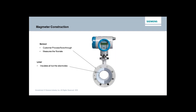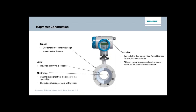Staying with the electrodes for just a moment — you may find in some mag meter designs some electrodes mounted along the bottom of the pipe in a horizontal installation. That would be a grounding electrode, and the purpose is to provide a way to grab any stray voltages that may be part of the process, coming down the process line or building up from static electricity, and getting rid of those so that the only thing being measured by the device is the voltage being created by the magnetic field and the conductive liquid.